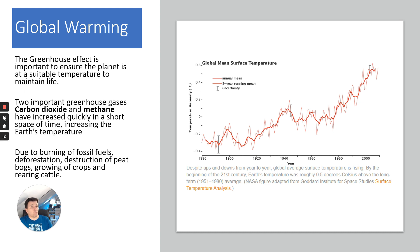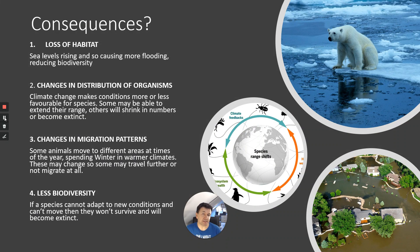So why is that a problem? What are the consequences for humans and other species? There are many, but four main effects are mentioned in the spec. First, loss of habitat: if sea levels rise it causes more flooding, reducing biodiversity. For example, polar bears swim well but need to move between ice flows — if those ice flows are no longer there, they can't survive indefinitely.